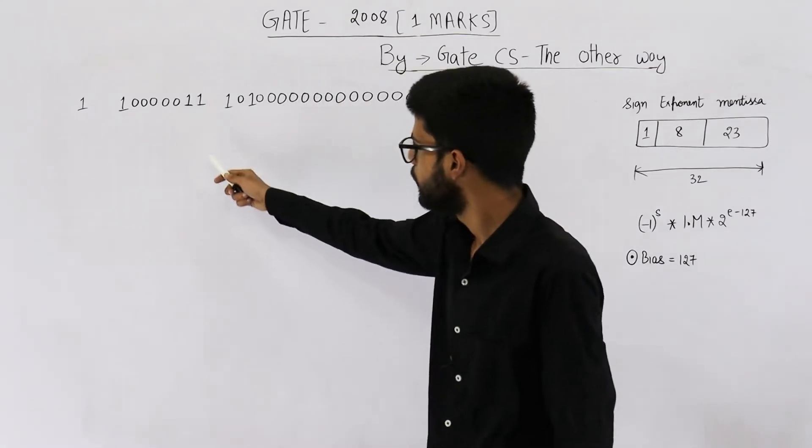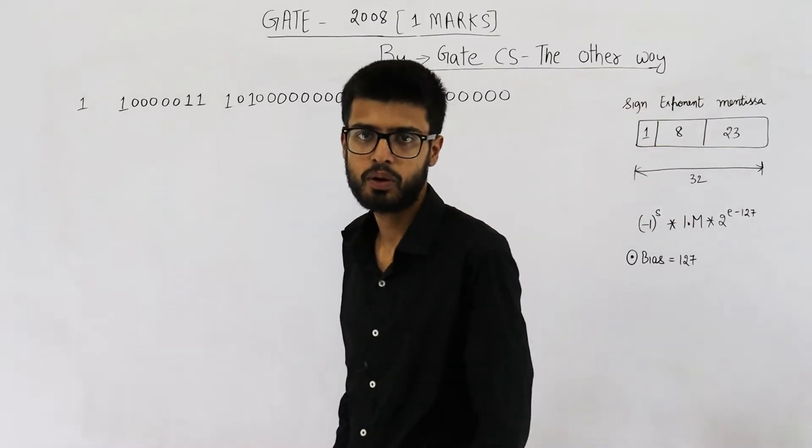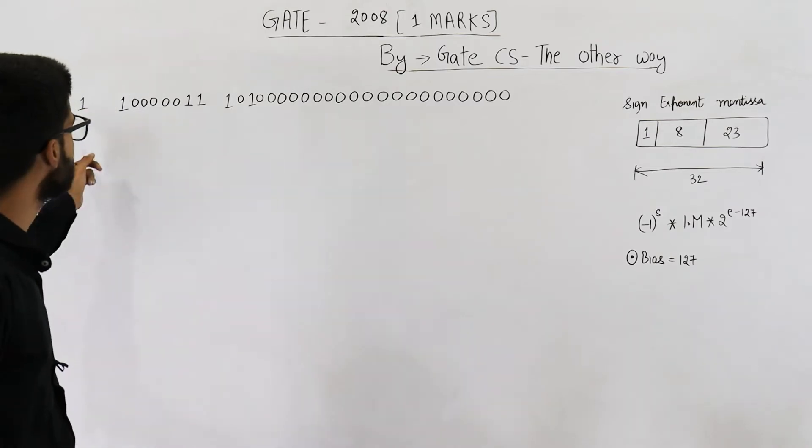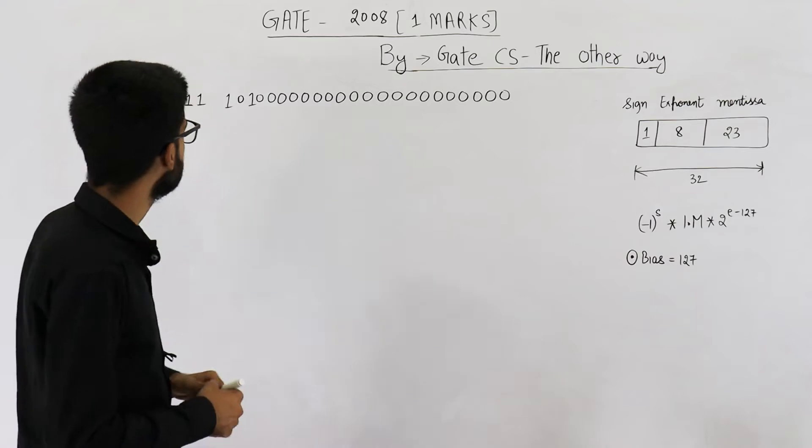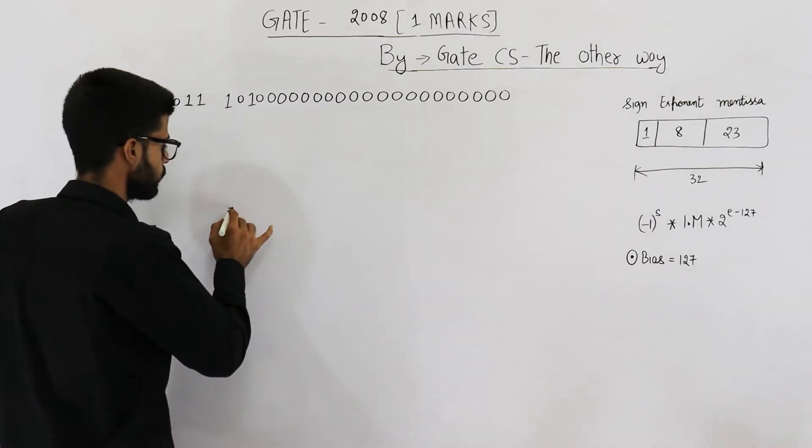They are saying these bits represent a floating point number in 32 bit single precision format, that IEEE 754 format. We need to determine what is the value represented by this pattern. So you can see it is some negative number because sign bit is 1.